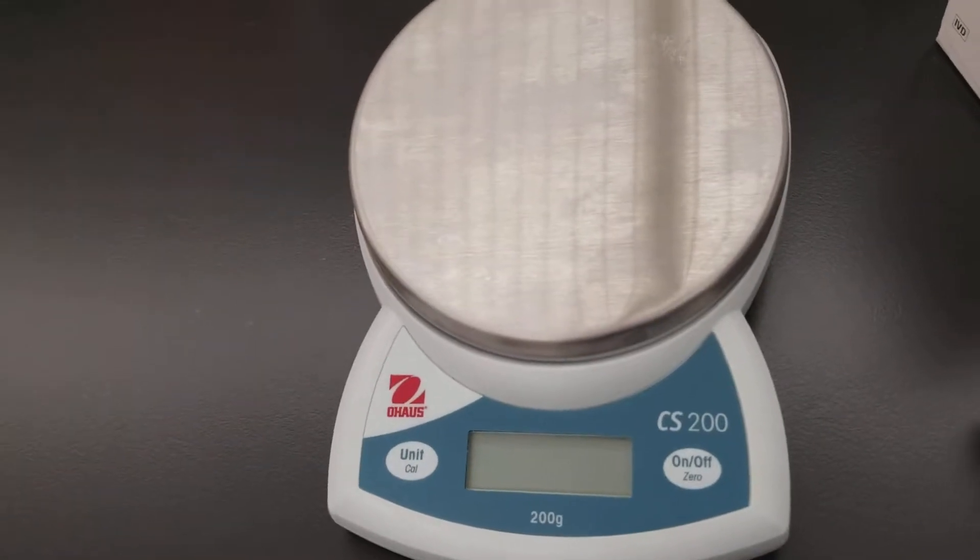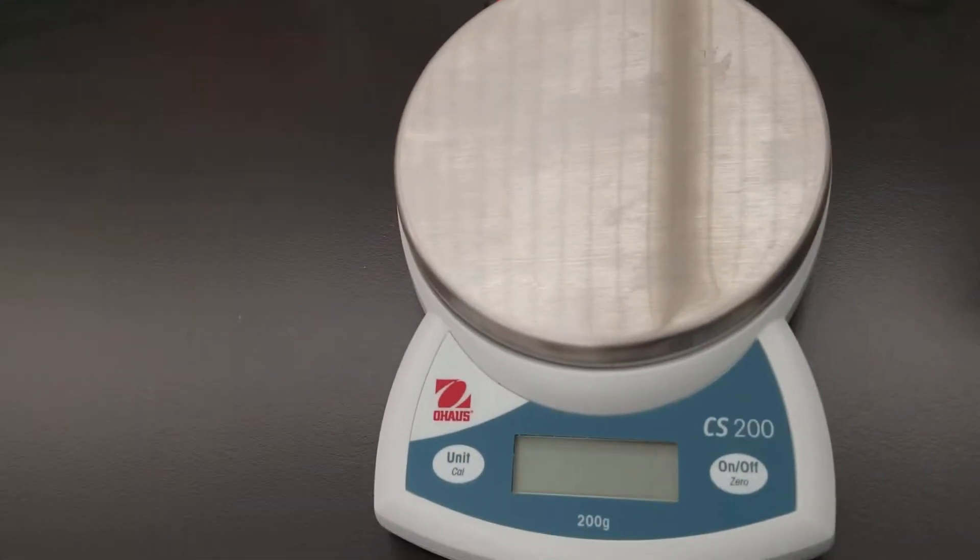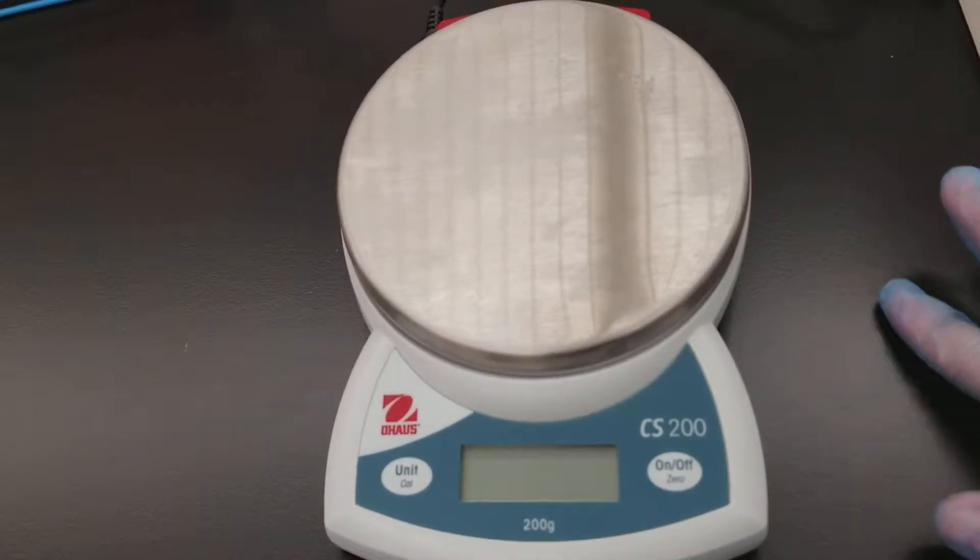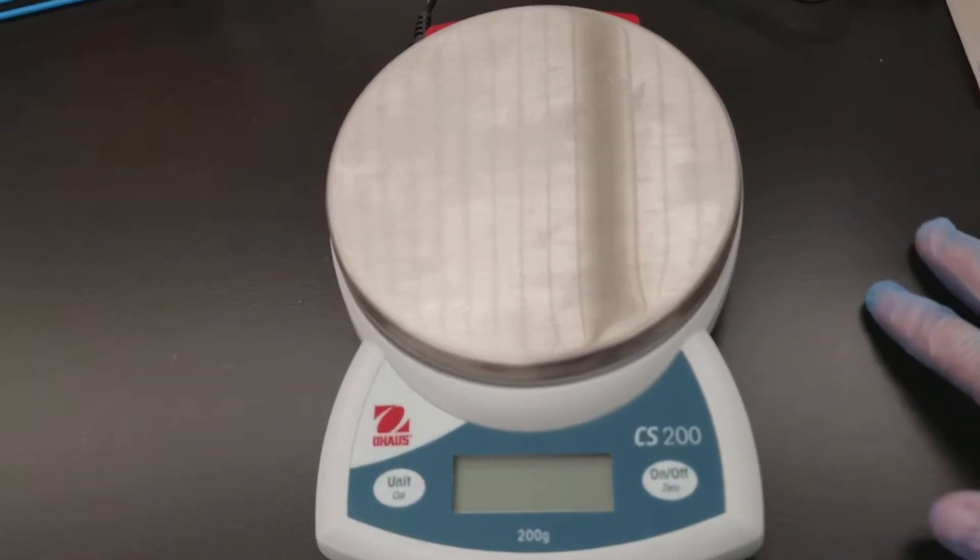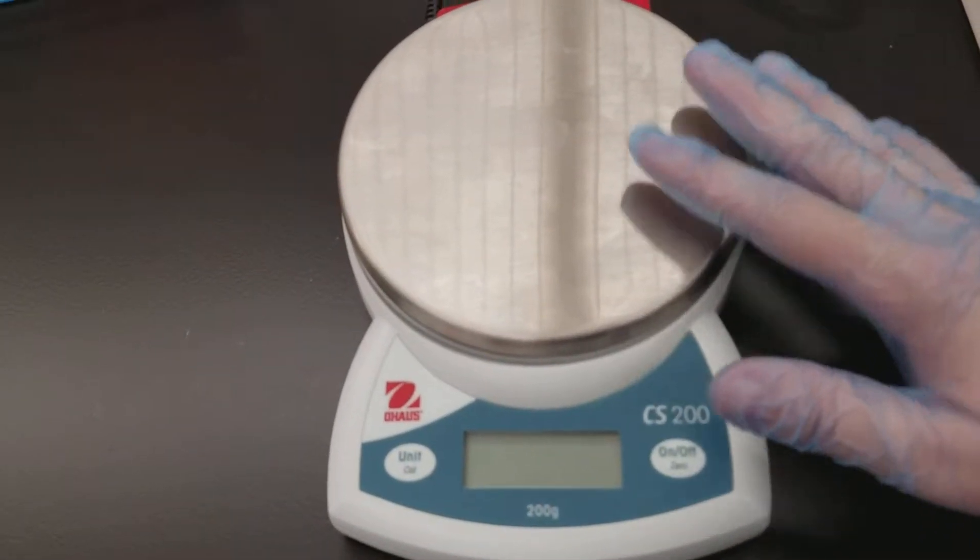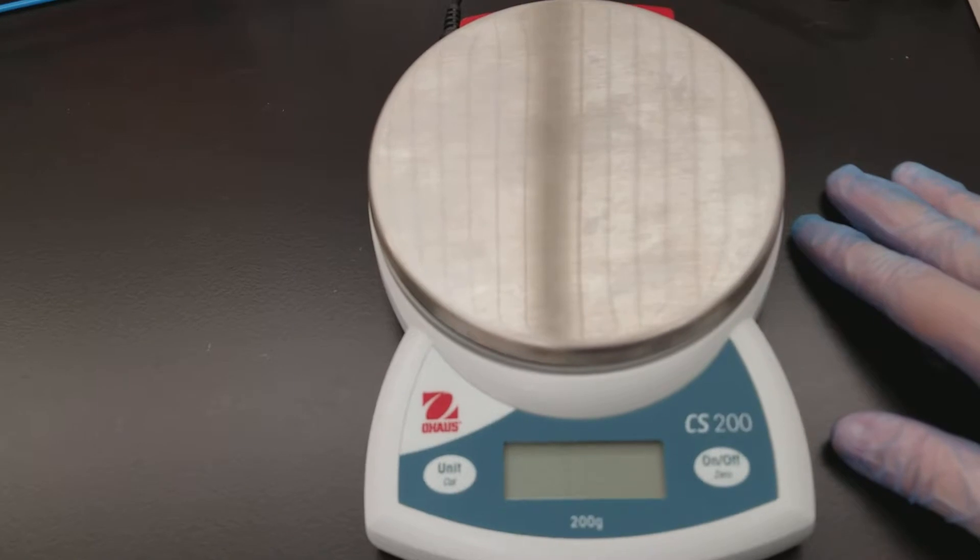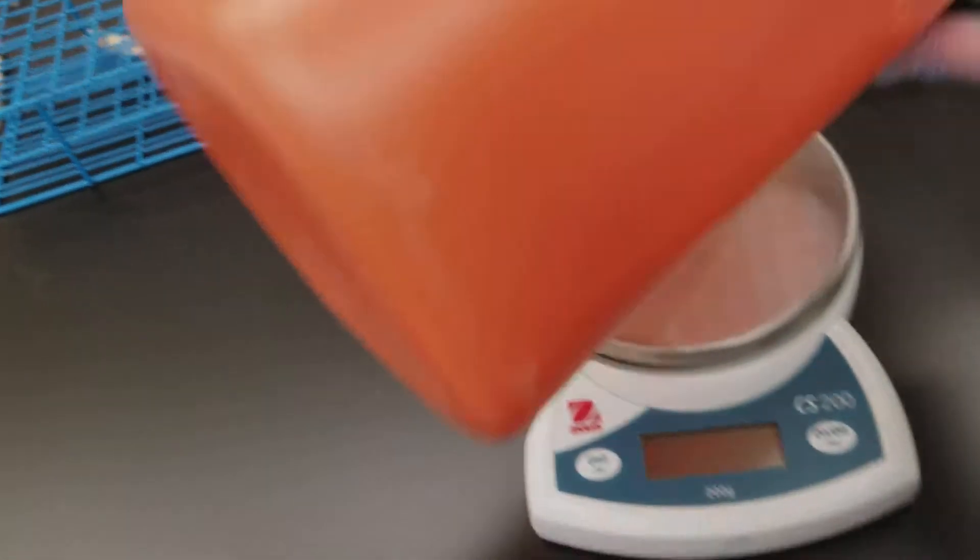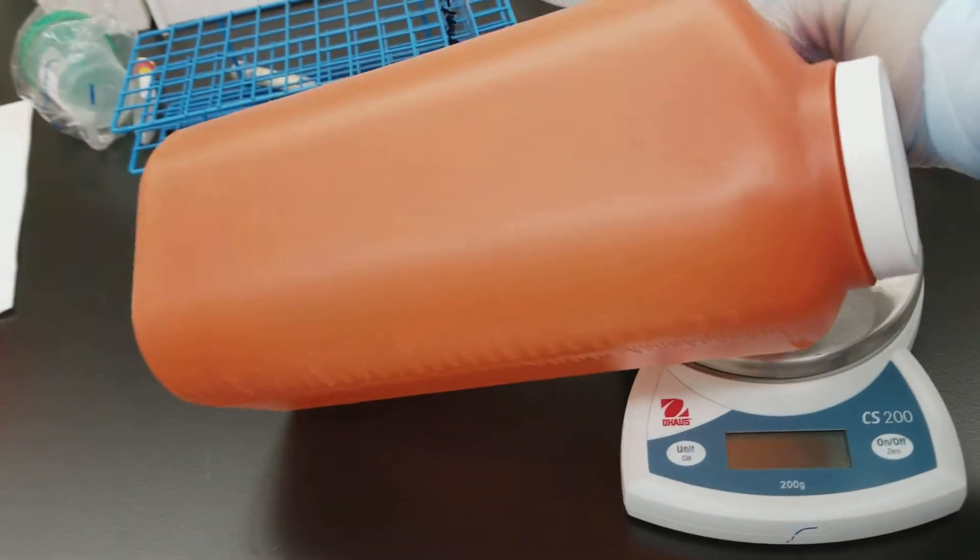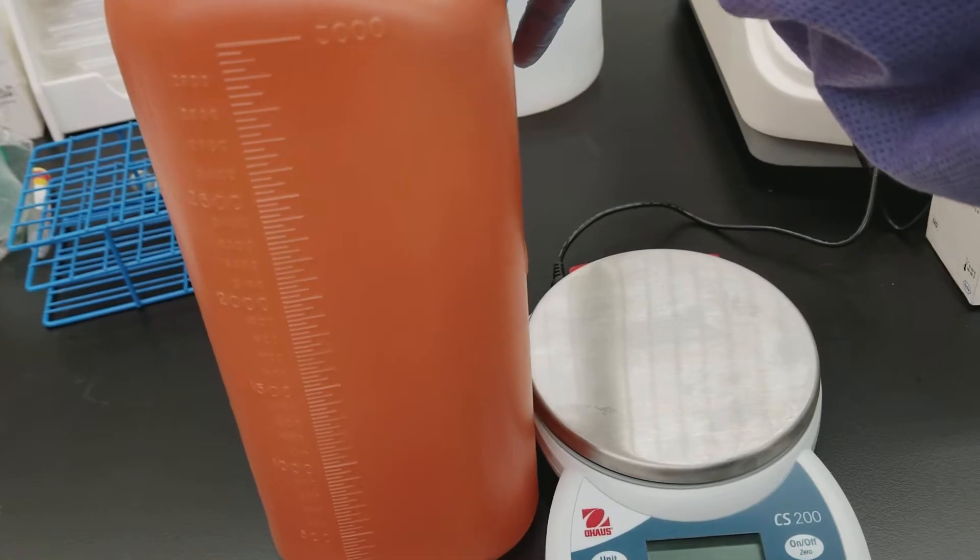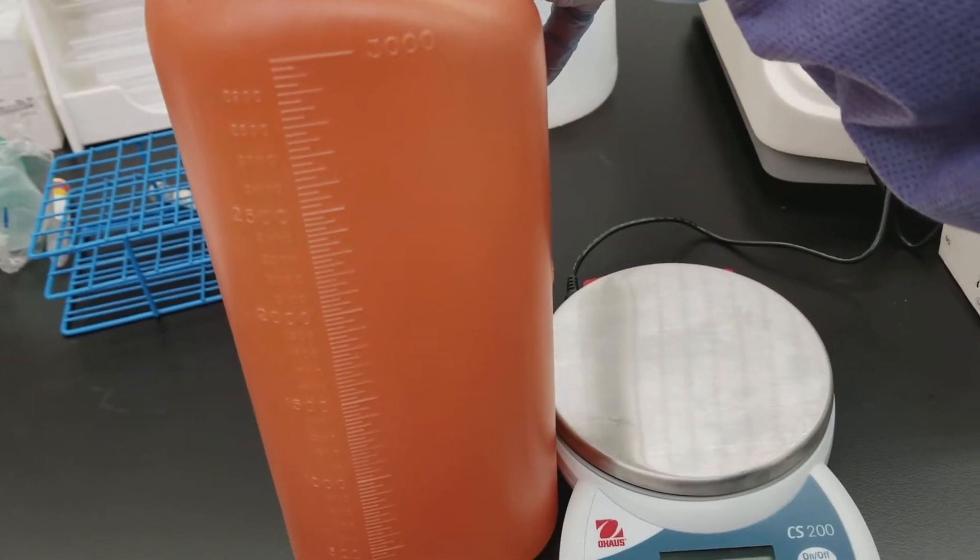Today we're talking about how to use a scale in the clinical laboratory and what it might be used for. First of all, it may be used to make calibrators or reagents, turning something dry into liquid reagent. We may also use it to figure out how much of a specimen somebody collected over a 24-hour period, just like a 24-hour urine.